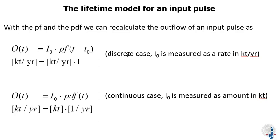In the discrete case, we are given an input pulse at a rate in kilotons per year. We would say that at time 0 we have maybe 10 kilotons coming in. With a discrete time period of 1 year, we then have an average inflow rate for the pulse of 10 kilotons per year. Then, multiplying this initial input rate by the probability density of the stock leaving at time t, we get the outflow. We take the inflow, multiply with the probability of leaving t minus t0 years later, which gives us the outflow.